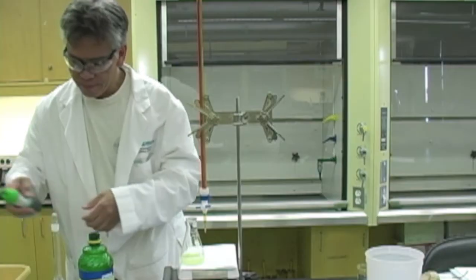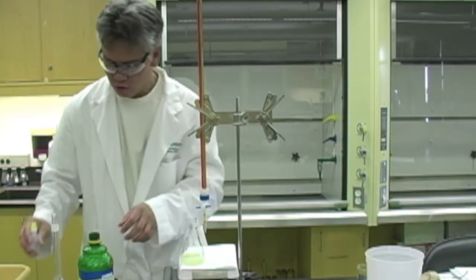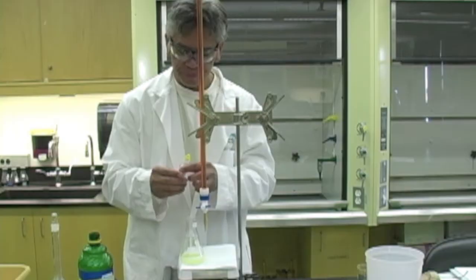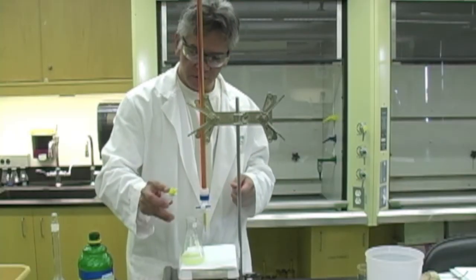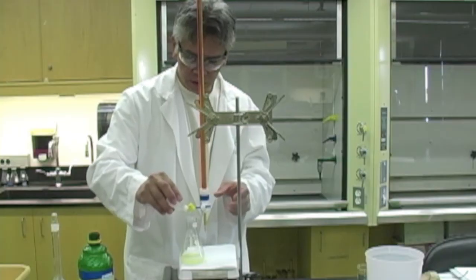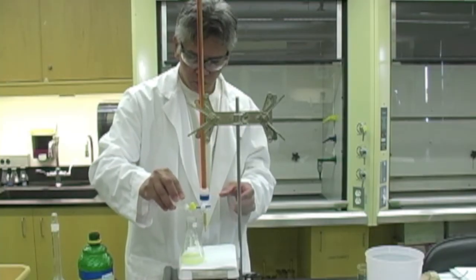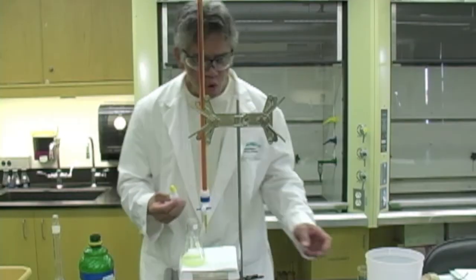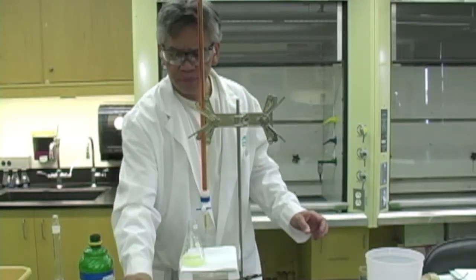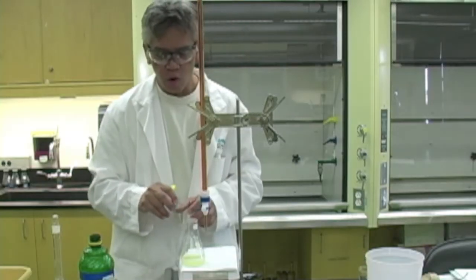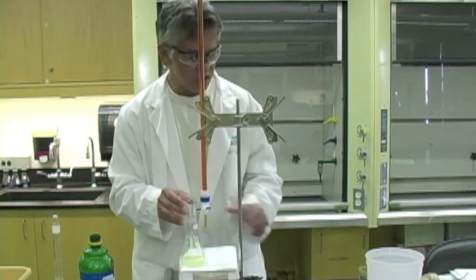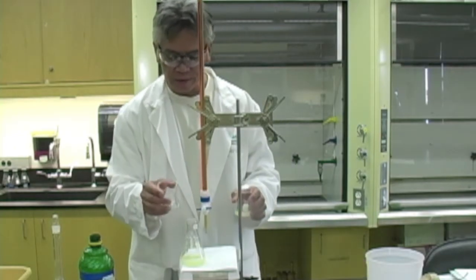The next step is to add your 10 drops of starch indicator. What you might want to try and do before you even start the experiment is test or do a pre-titration so you know exactly what the endpoint looks like.